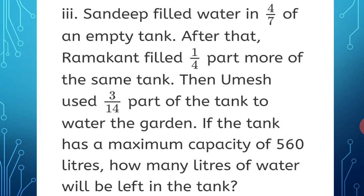Question 3: Sandeep filled water in 4 upon 7 of an empty tank. Ramakanth filled 1 upon 4 part more of the same tank. Then Umesh used 3 upon 14 part of the tank to water the garden. The tank has a maximum capacity of 560 liters. How many liters of water will be left in the tank?